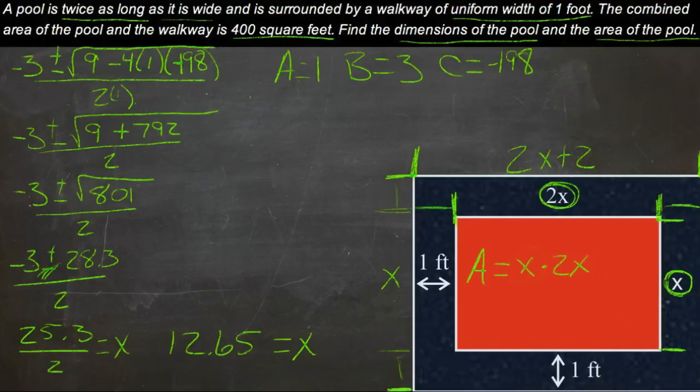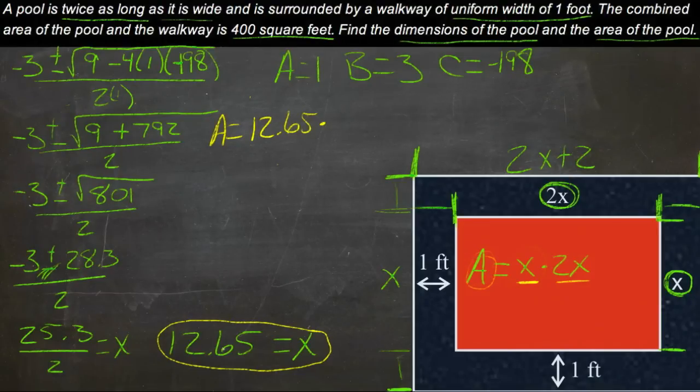Now let's kind of circle that with another color here, and we'll use that color to finish up. We're almost done. We know now that x is 12.65, and 2x is the other dimension. So to find our overall area, we need to say area is equal to 12.65 times 2,